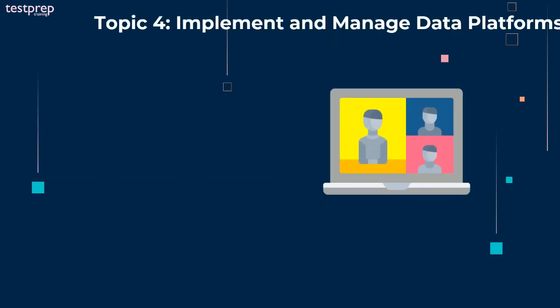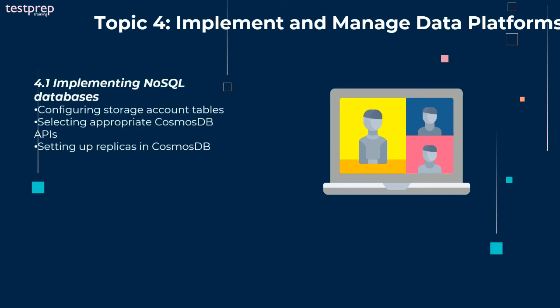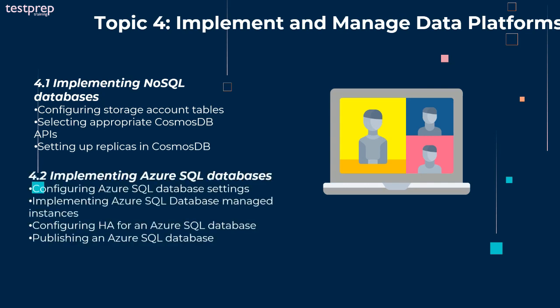Domain 4: implement and manage data platforms, with two parts. First, implementing NoSQL databases, divided into three sub-parts: configuring storage account tables, selecting appropriate Cosmos DB APIs, and setting up replicas in Cosmos DB. Second, implementing Azure SQL Databases, divided into four sub-parts: configuring Azure SQL Database settings, implementing Azure SQL Database Managed Instances, configuring HA for an Azure SQL Database, and publishing an Azure SQL Database.